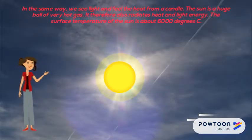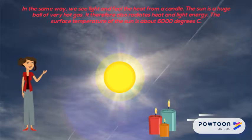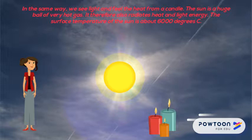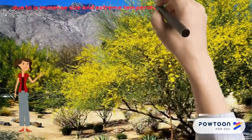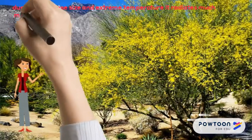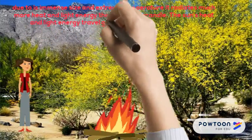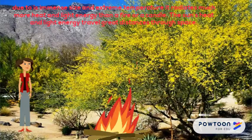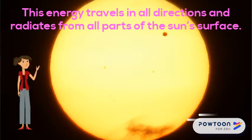In the same way, we see light and feel the heat from a candle. The sun is a huge ball of very hot gas. It therefore also radiates heat and light energy. The surface temperature of the sun is about 6000 degrees Celsius. Due to its immense size and extreme temperature, it radiates much more heat and light energy than a fire or a candle. The sun's heat and light energy travel great distances through space, radiating from all parts of the sun's surface.